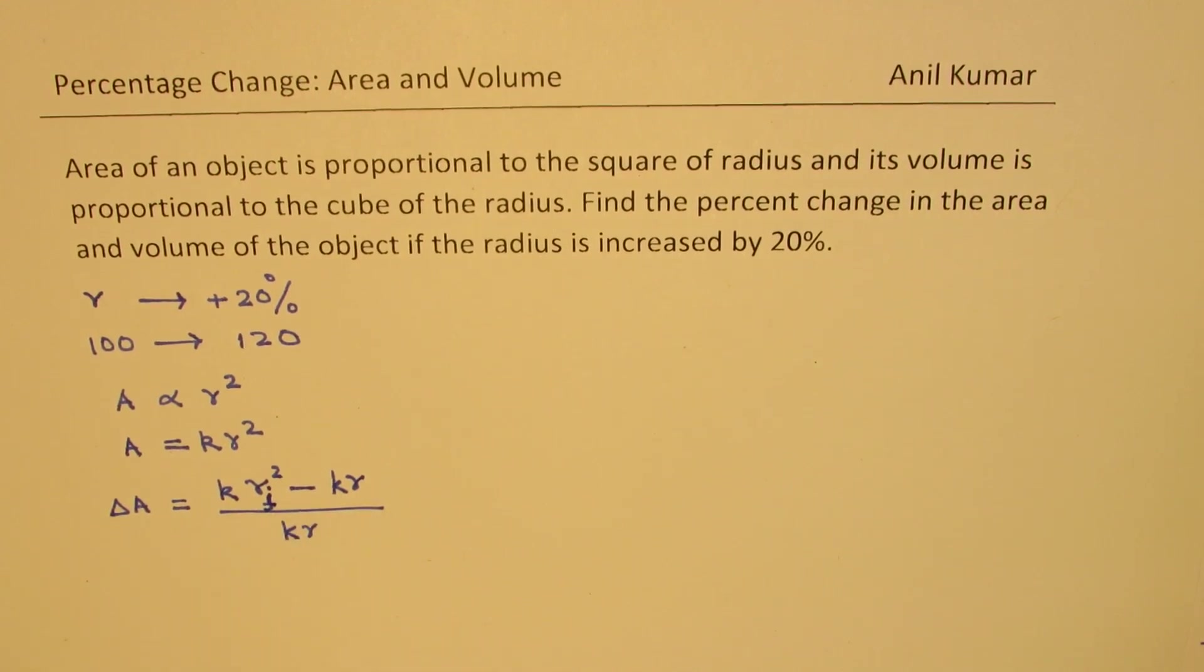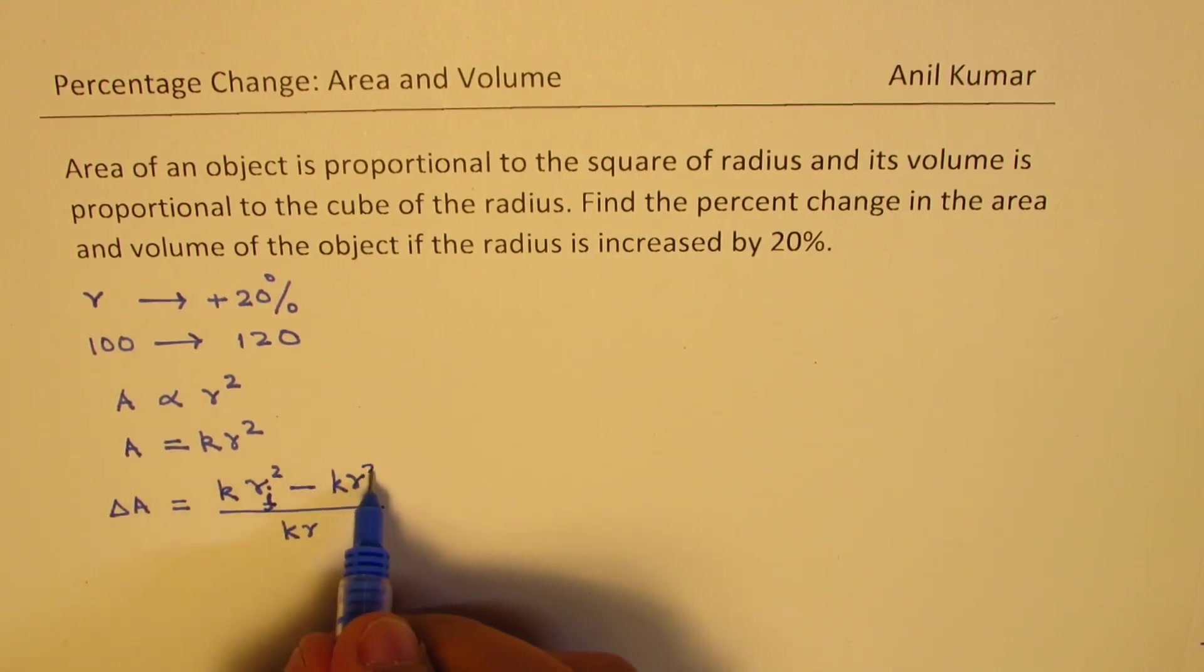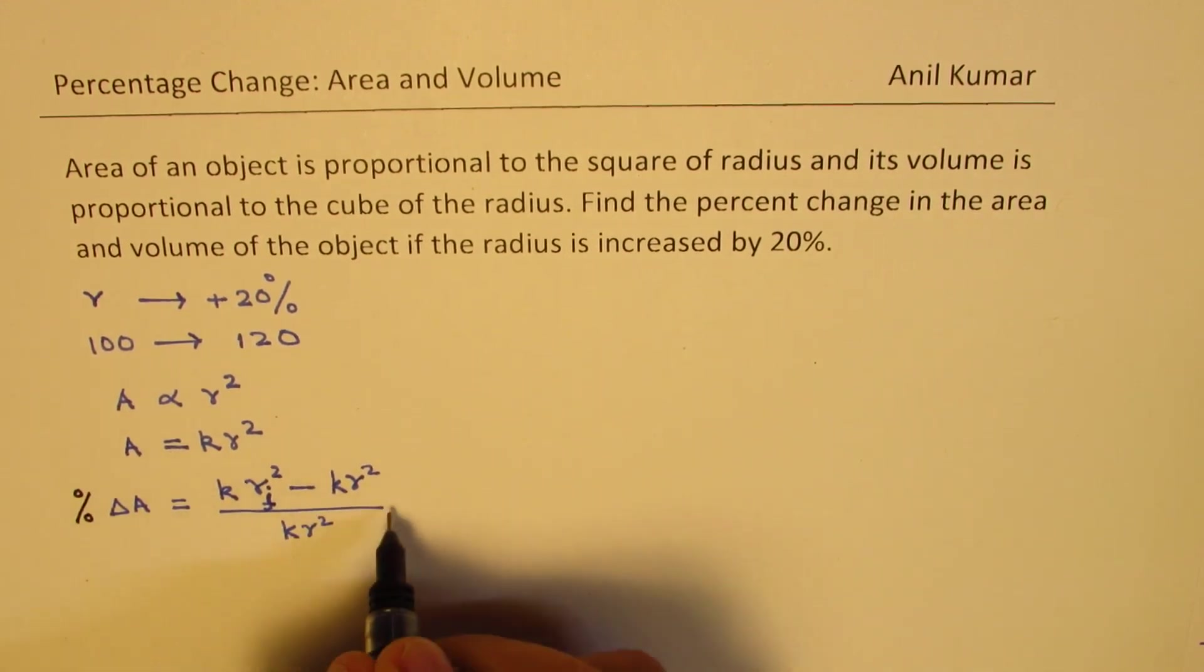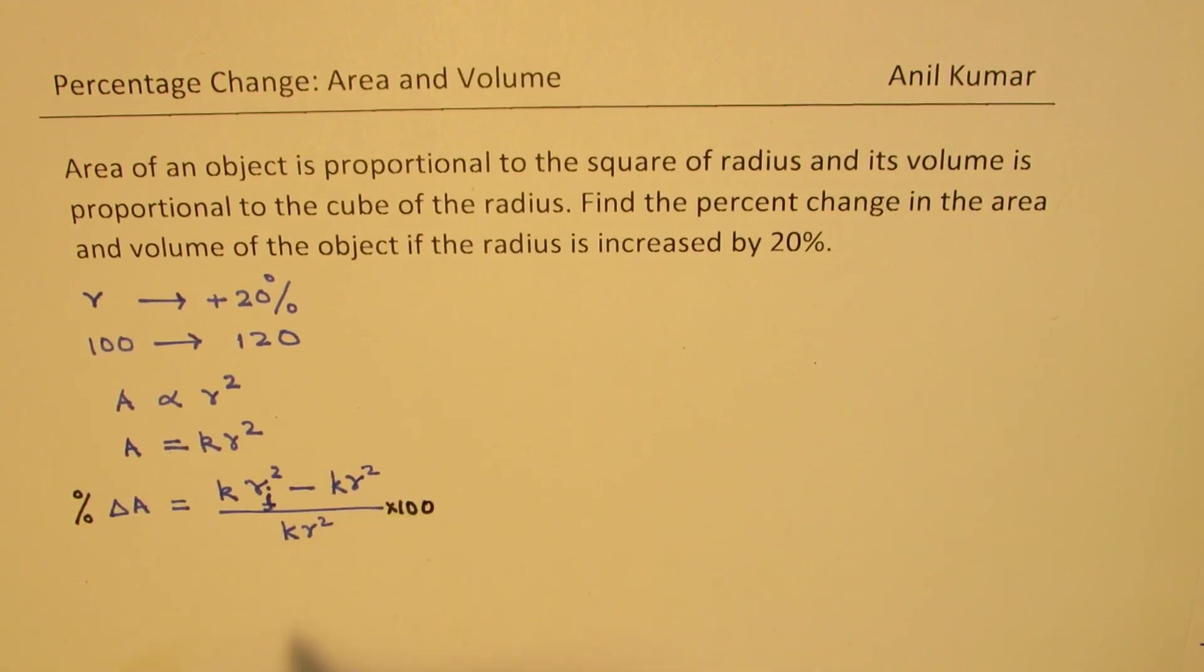Let's call this F as the final value. I sometimes get confused with initial value. So that is how it will be since K R square is your final. So that is the change in area. So if I want to find percent change in area then I have to multiply this by 100.